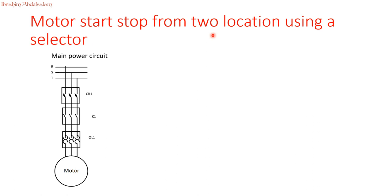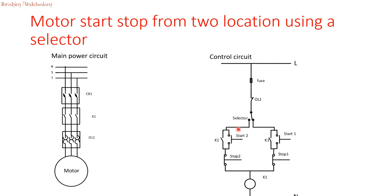Start/stop from two locations using a selector: the power circuit remains the same and is not affected by the control changes. In the control circuit, we have a selector, start one, start two, contactor one latch, contactor one and two stop buttons. The overload is moved so that whether the selector deflects right or left, the power will be interrupted in case of overload.